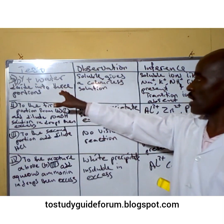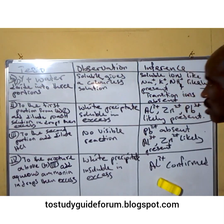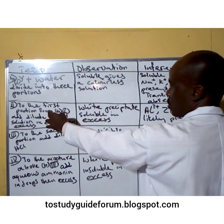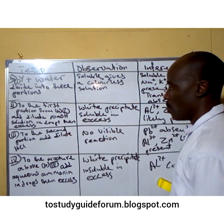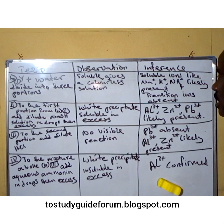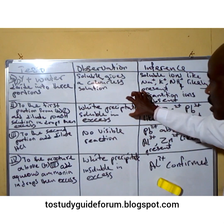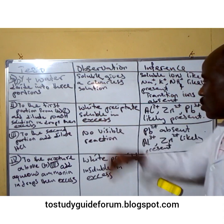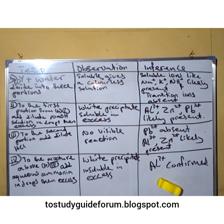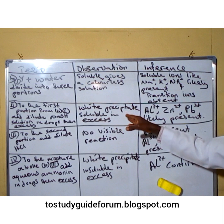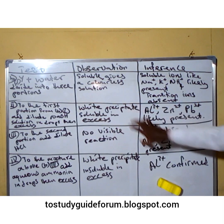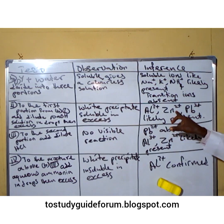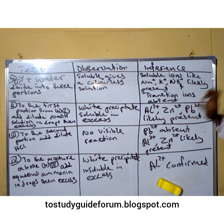We then divide our solution into three portions. To the first portion, we added sodium hydroxide solution in drops and in excess. In drops, we observe white precipitates. When added in excess, the precipitate is soluble. This means the possible ions that can give us this observation are aluminium ion, zinc ion, and lead ion — these are likely to be present.